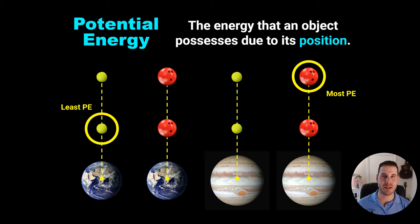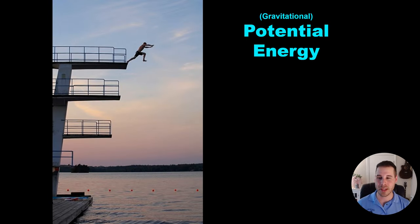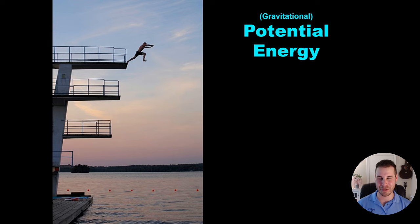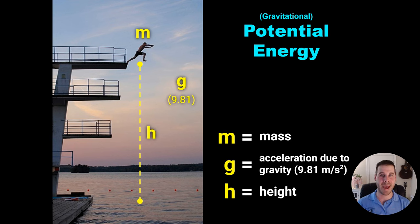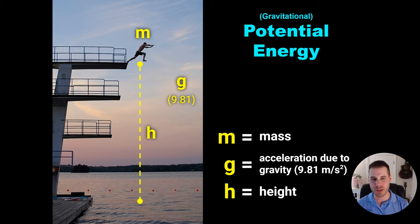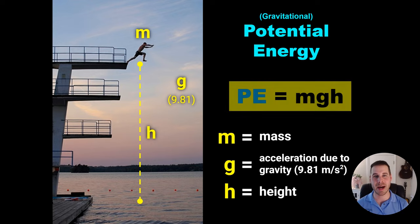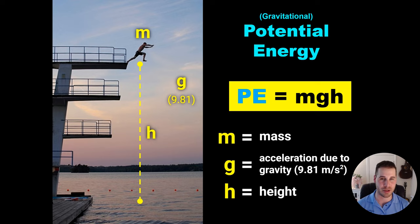Now that we know the factors affecting potential energy, let's look at how we calculate it. Someone jumping into a lake: just before they fall, their potential energy is about to turn into kinetic energy. It's based on three things: mass of the object, the gravitational field they're in — on Earth that's 9.81 meters per second squared near the surface — and the height. The equation is: potential energy equals mass times gravity times height.